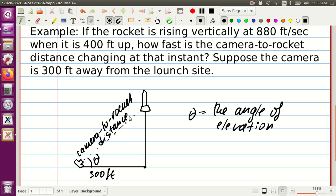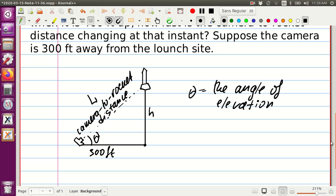What else do we know in this problem? We know that the rocket will be located at a height h. And let's call this distance, which is camera to rocket distance, to be L.